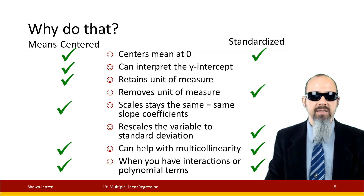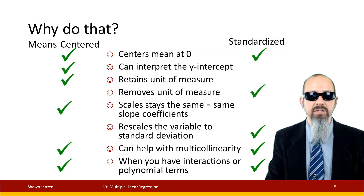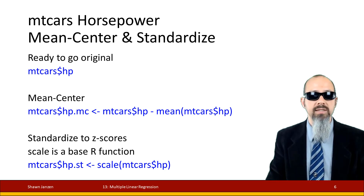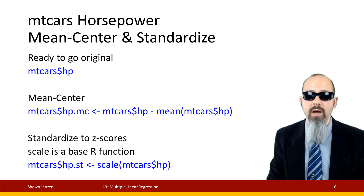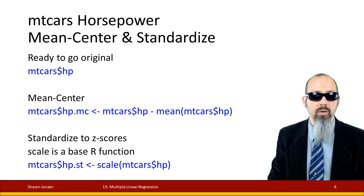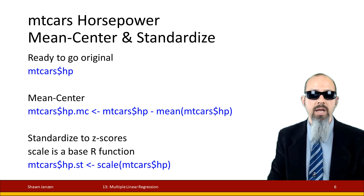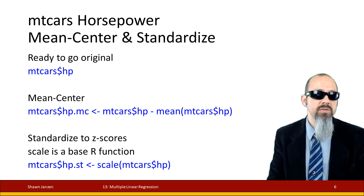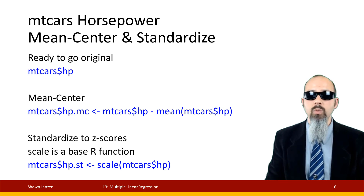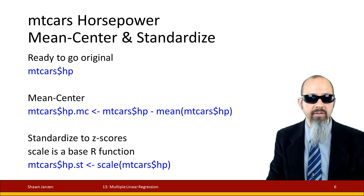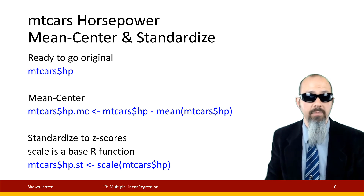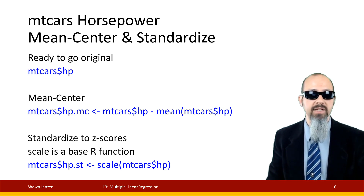Standardizing can help you with multicollinearity and when you have interaction terms and polynomial terms. Mean centering can help with that as well. Let's look at some examples using the mtcars dataset and the horsepower variable. To mean center it, I take mtcars$horsepower minus the mean of mtcars$horsepower and store it in a new variable called mtcars$HP.MC. To standardize it, I use the scale() function and store the result in mtcars$HP.ST for horsepower standardized.